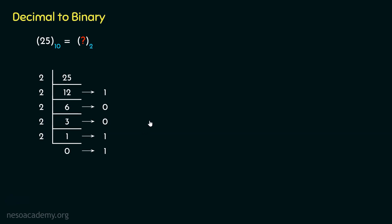Notice that every time the remainder we have is either 0 or 1. Why is that? Because if you divide any number by 2, either the remainder is going to be 0 or it is going to be 1. And 0 and 1 are the symbols of binary as well — that's the reason why the factorization took place with the base value 2. In order to get the equivalent binary of 25, we are going to retain these remainders in reverse order: this will be the most significant bit, and this is going to be the least significant bit.